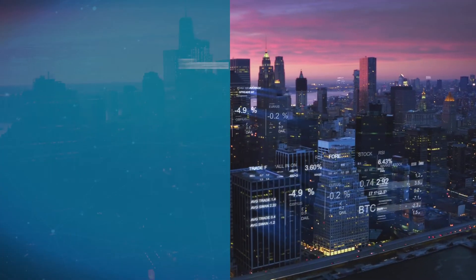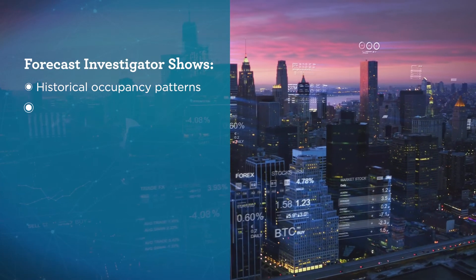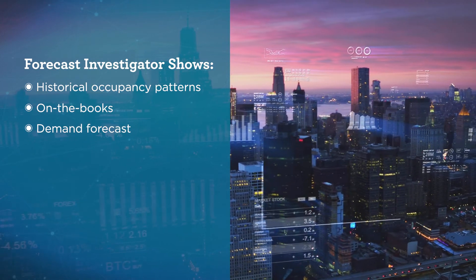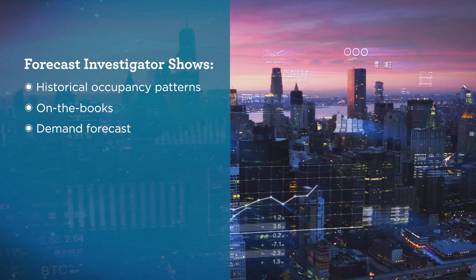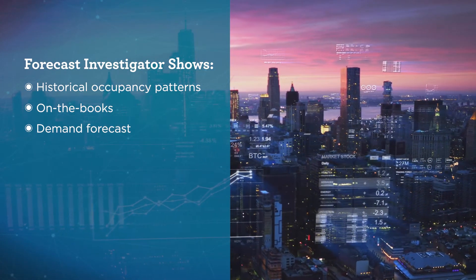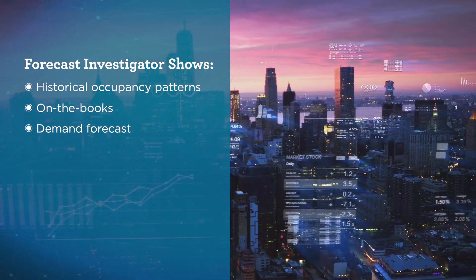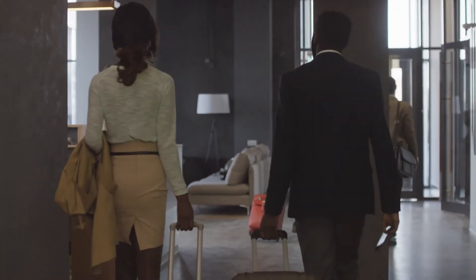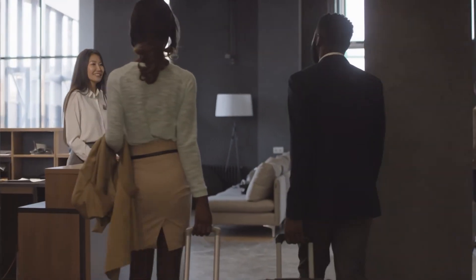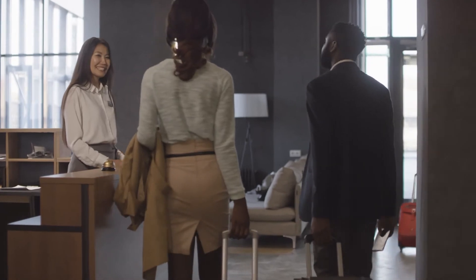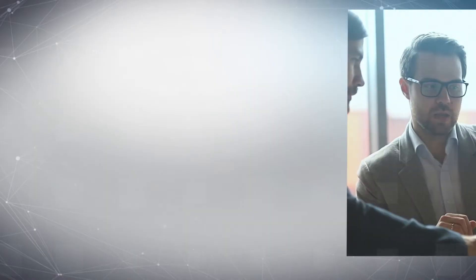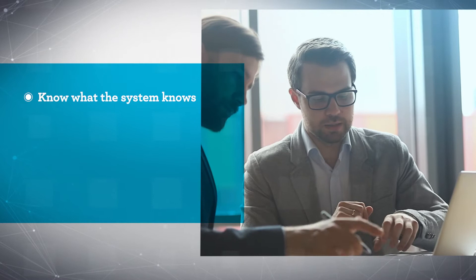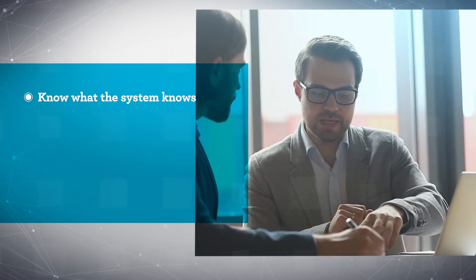And just like with pricing, interactive visualizations illustrate past occupancy patterns alongside your current on-the-books and demand forecast data. This allows you to more easily identify how long- and short-term pattern changes, along with seasonality, impact the system forecast. Users can explore a forecast period to ensure they know what the system knows and vice versa.